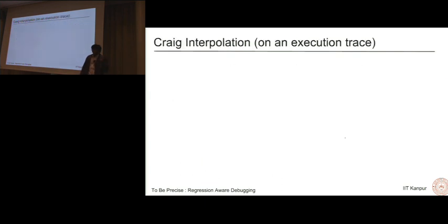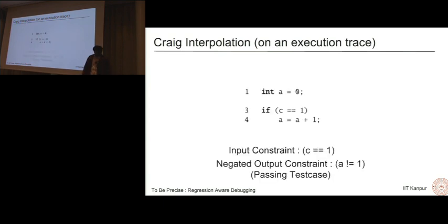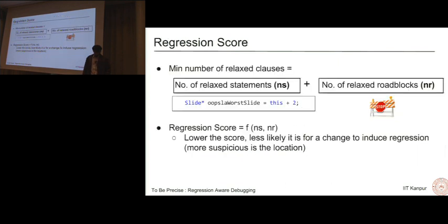We perform Craig interpolation on execution trace, not the actual program. We strip away the previous program. The input was that the variable c is now 1, and the output was that the variable a needs to be 1. So we negate it. The program along with these constraints is now unsatisfiable. Suppose we want to compute an interpolant at the basic block after line 3. Our A in A and B is a = 0 and if c = 1. The B part contains the input constraint, the output constraint as well as a = a + 1.